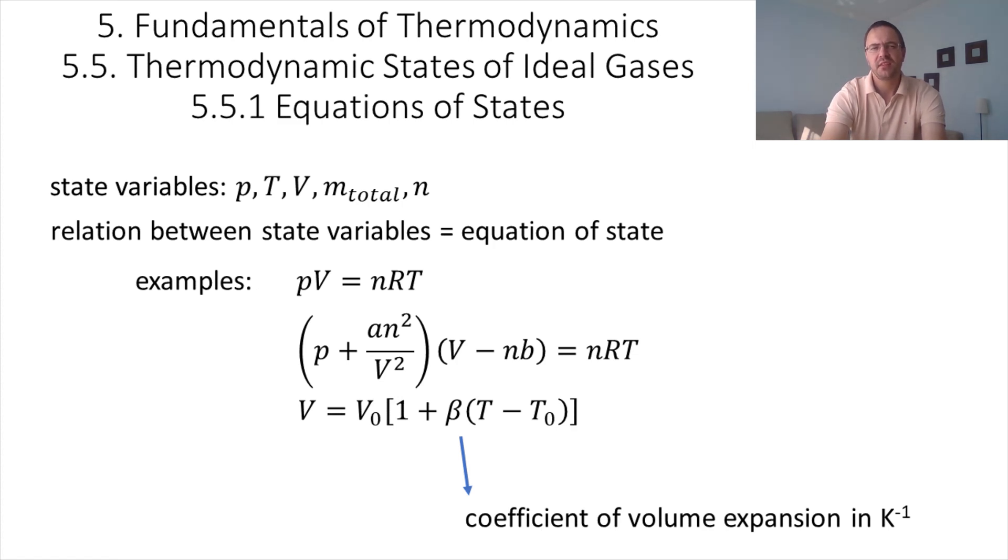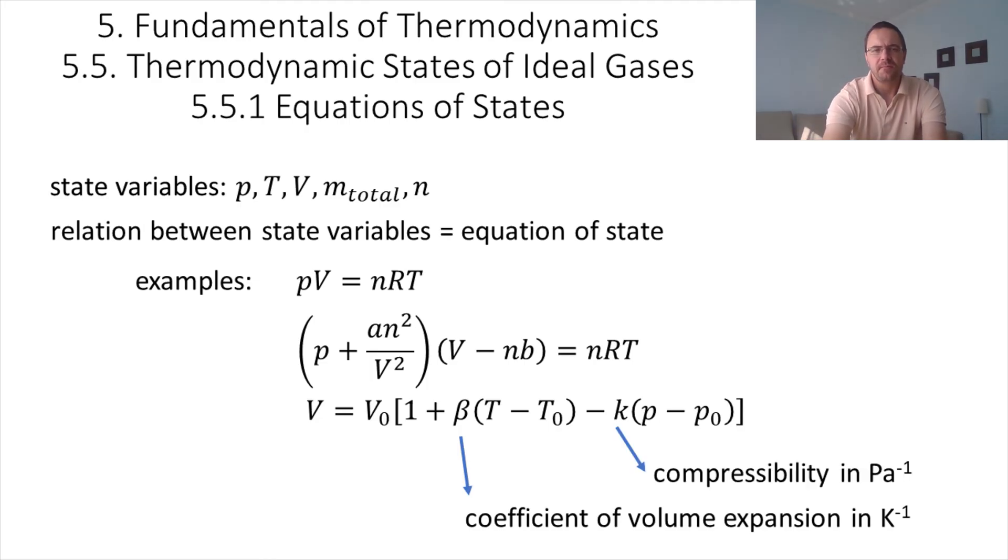This is an equation of state that relates the volume with the temperature. But we can also introduce the pressure and add a term such as minus k times p minus p0. In this case, k is the compressibility in inverse Pascal, and we have a negative sign because an increase of pressure should result in a decrease of volume.